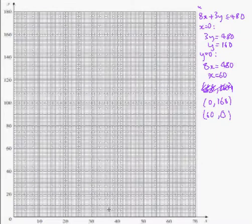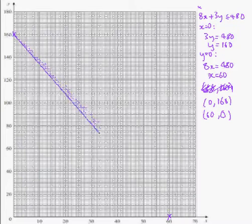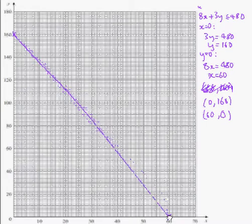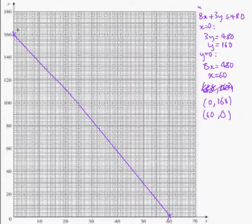We want to now plot those on the grid. So 0, 160 is up here. And 60, 0 is here. And we're going to draw a line through, like that. And then we're going to label it. Don't forget to label your line. It's this one, 8x plus 3y equals 480. If you forget to label your line, it can get quite confusing later on.